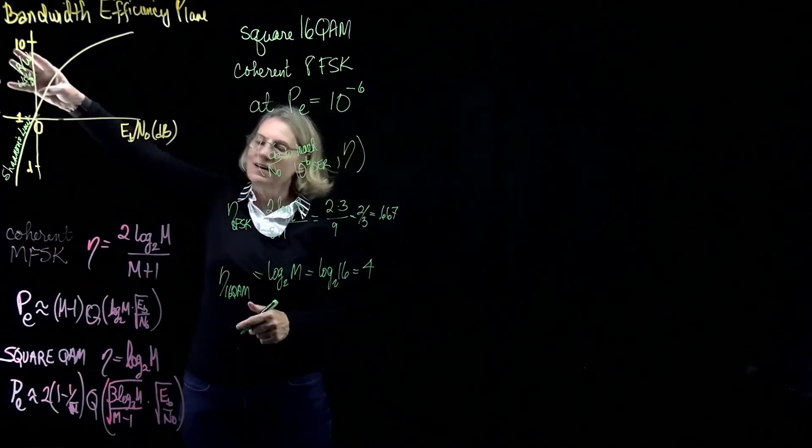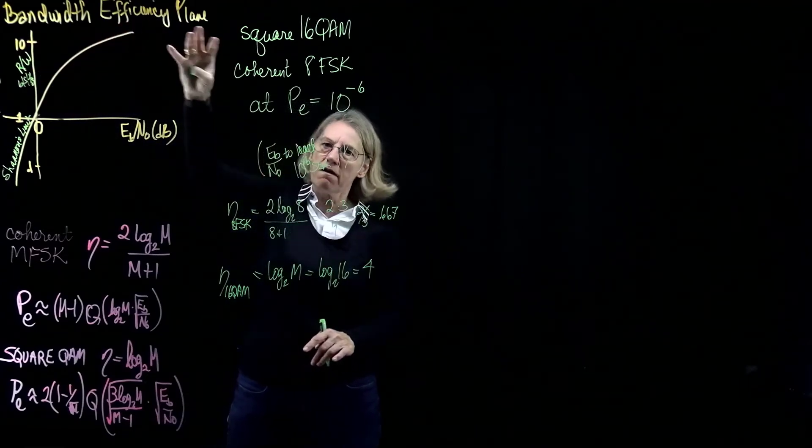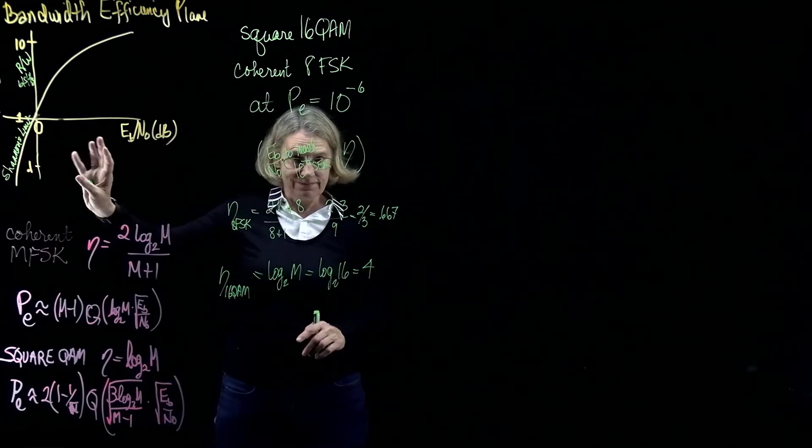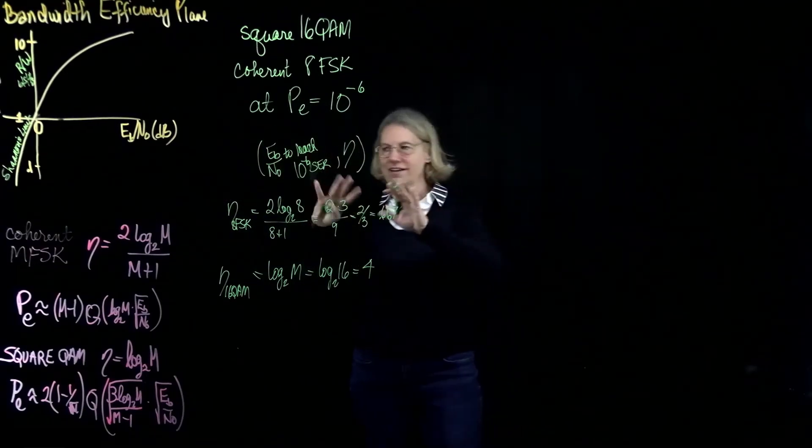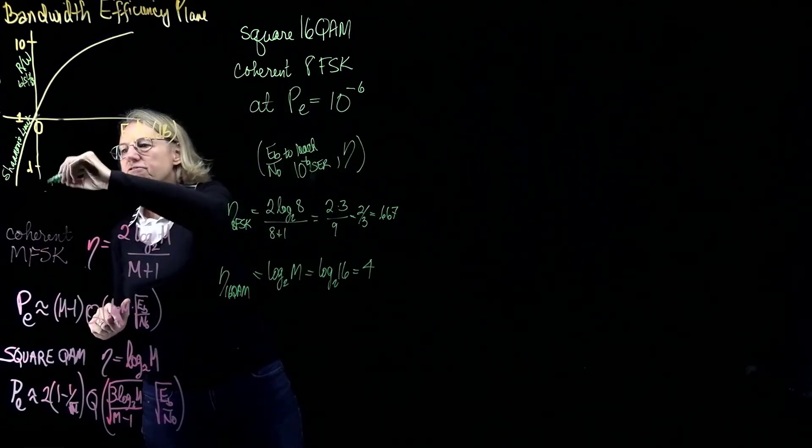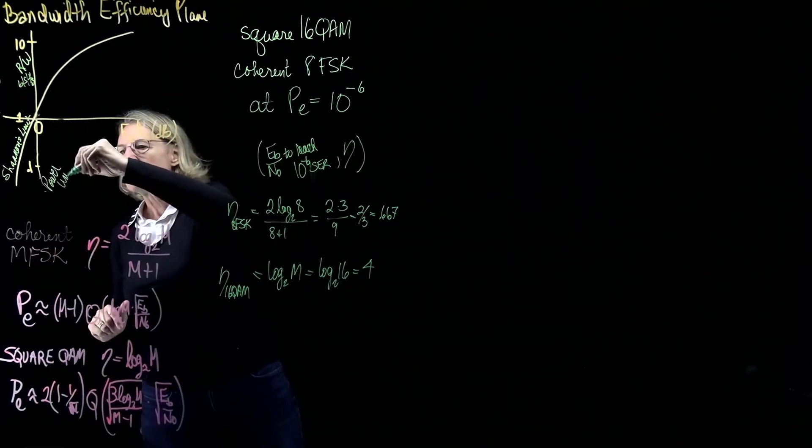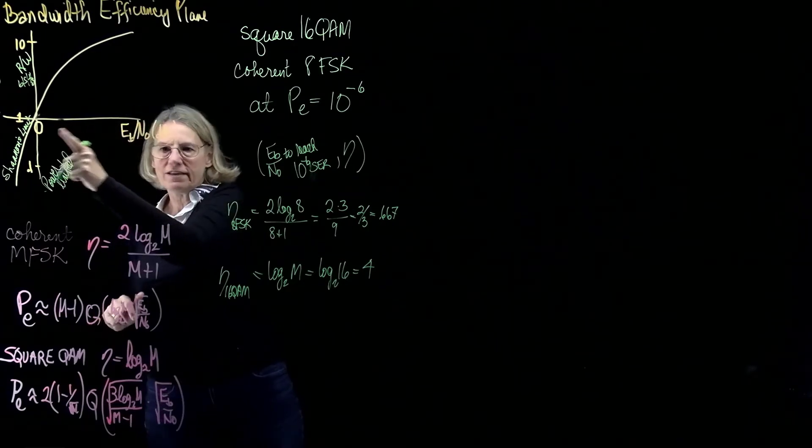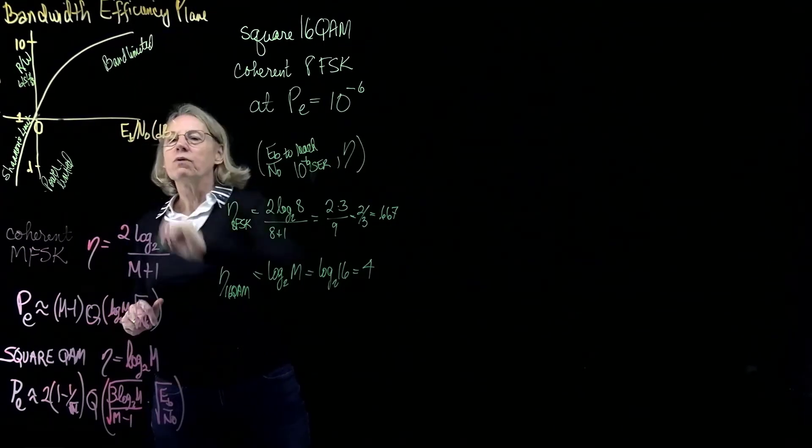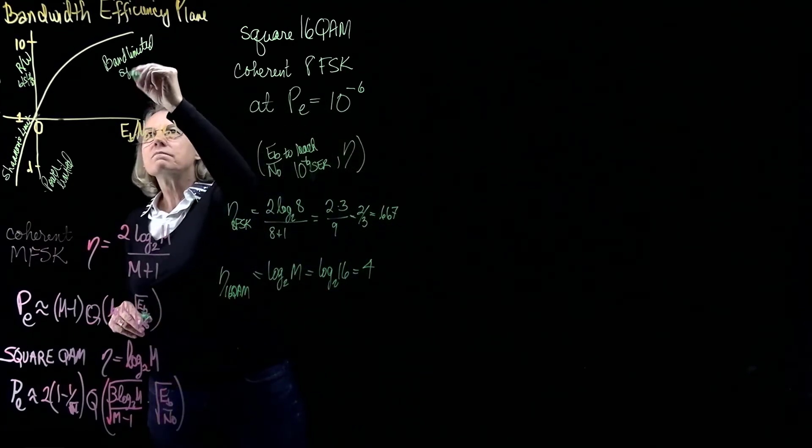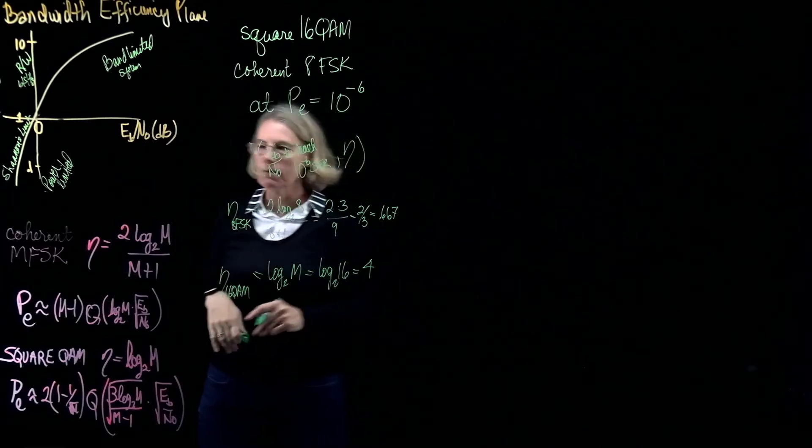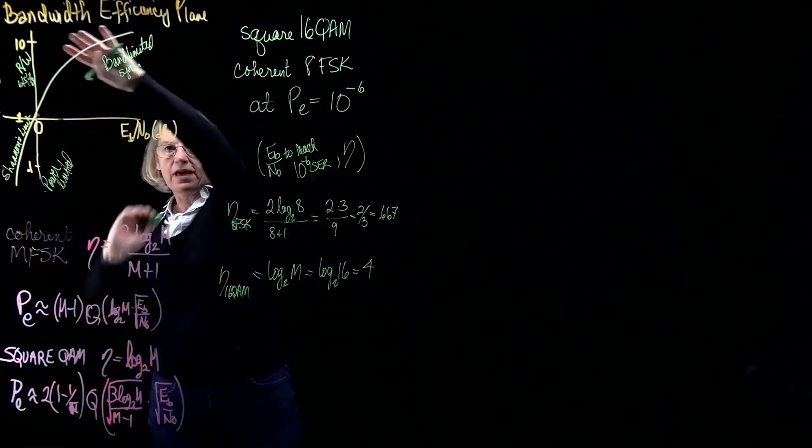So we can see that the QAM modulation is coming up in this part of the plane, and that the FSK with 0.67 is going to be down in this region. And remember, there's two regions, two important regions in this. This would be called the region for power-limited systems, because they're not very good at spectrum, but they are very good for low Eb over n0. And this would be the region for band-limited systems, where you would find a modulation format for band-limited systems, because they're very spectrally efficient. So we're up here at the high spectral efficiency, but at high Eb over n0.